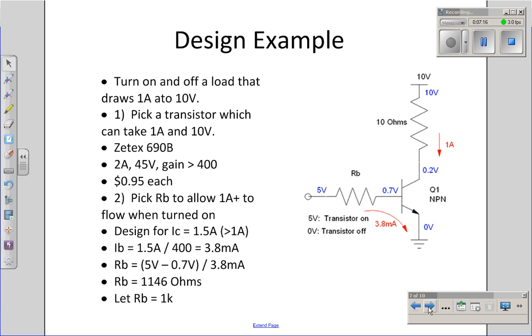Here's the design approach. I need to pick RB to make sure the transistor saturates. Let's pick a point, say 1.5 amps, for my design point when it's on. I want beta times IB to be 1.5 amps, something bigger than one. If I pick a transistor, say one with a beta of 400, I know that IB should be 3.8 milliamps. You're 1.5 amps divided by beta, the 400. If I know IB, I know RB. I've got 4.3 volts across RB. I've got 3.8 milliamps through RB. I know what RB is. RB should be 1146 ohms.